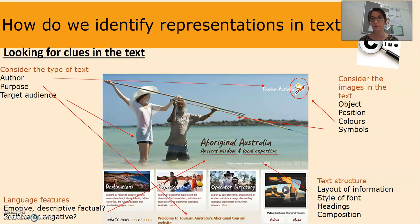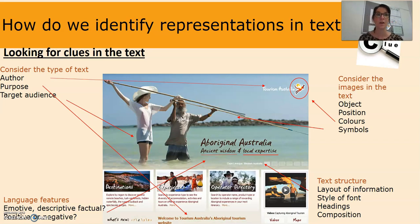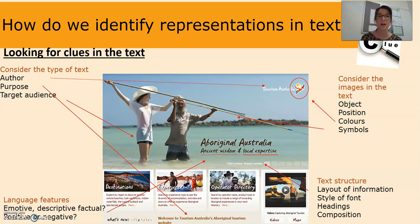The other thing we look for is text structure — the layout of information, the style of font, and the composition. The main picture at the top is supposed to entice people to visit Australia and take part in Aboriginal tourism. Then there are some other pictures at the bottom with more information about destinations, experiences, or an operator directory. The style of font is quite casual — it looks like somebody wrote it themselves, which makes it feel more personal. So that is how we look at all the clues in the text.